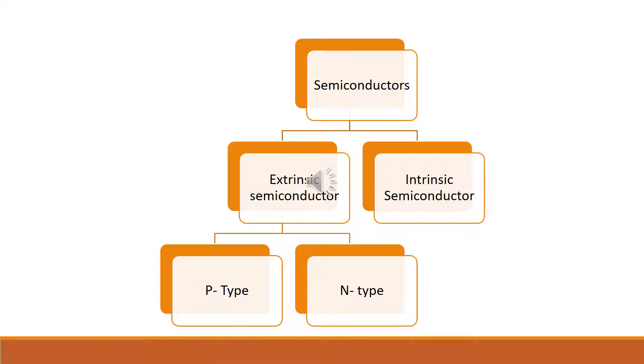There are two types of extrinsic semiconductors: one is P-type semiconductor and another one is N-type semiconductor.